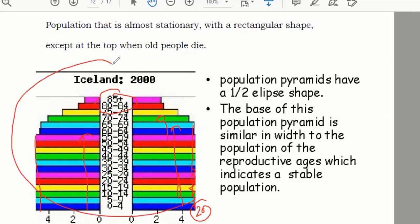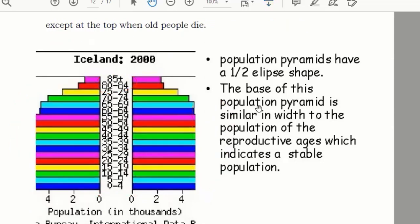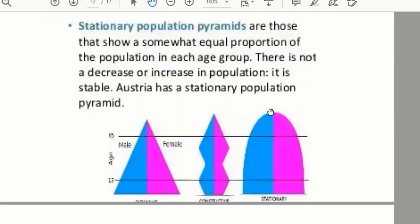Sometimes it comes like this, and sometimes the shape will be like this. See here, like this. The stationary population pyramids are those that show somewhat equal proportion. See equal proportion, they are just almost similar.